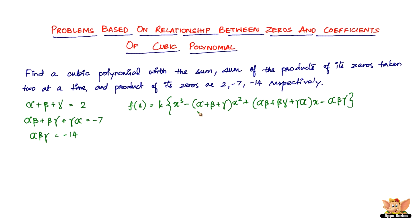You just substitute into this equation to find the required cubic polynomial. So the equation is: K(x³ - 2x² + (-7)x - (-14)) = K(x³ - 2x² - 7x + 14).